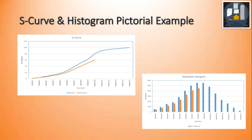Here is a pictorial example of the S-curve and histogram. On the left side we see the S-curve: the X-axis shows the timeline in months, the Y-axis shows cumulative percentage progress. The blue line is generated from the baseline (the planned curve), and the orange curve represents actuals as we progress. As we can see, the orange is below the blue curve, which means detailed engineering is behind schedule.